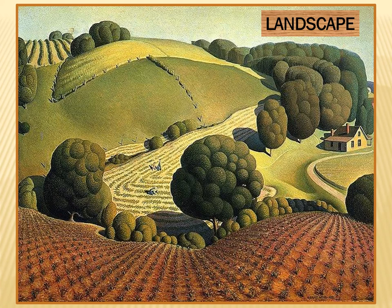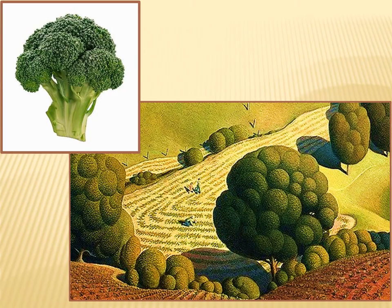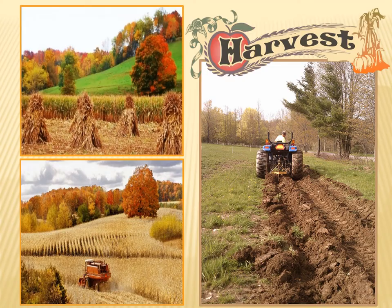Have you noticed the roly-poly trees? Their round shapes remind people of a certain green vegetable — they look like broccoli. Do you think the trees really looked like this? No. Grant chose to make patterns in the trees to decorate this landscape.